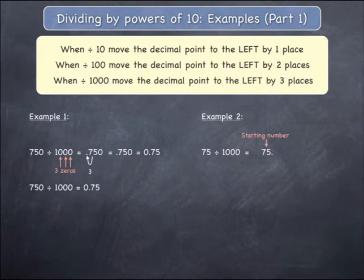Since you are dividing by 1000, which has three zeros, the decimal point needs to move to the left by three jumps. The first jump moves it from immediately after the 5 to between the 7 and the 5. The second jump moves it to immediately before the 7.